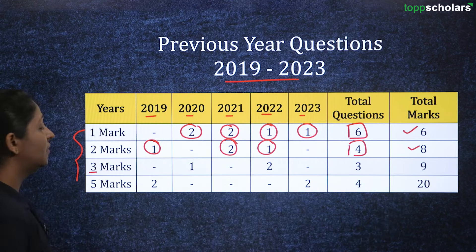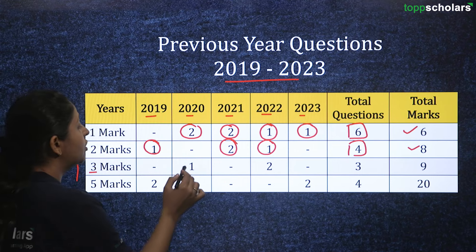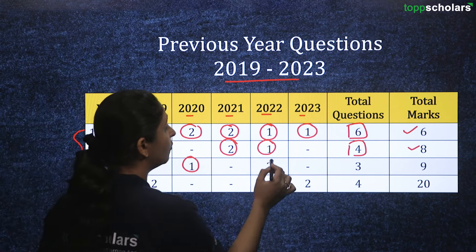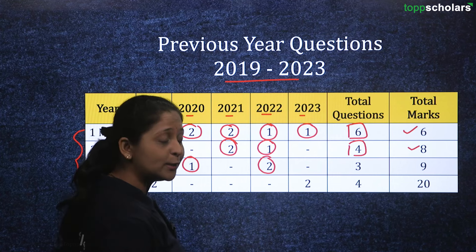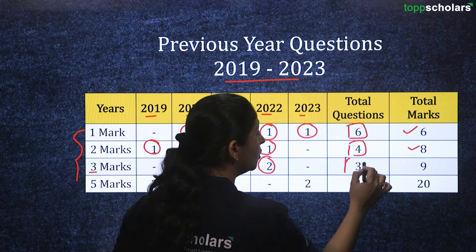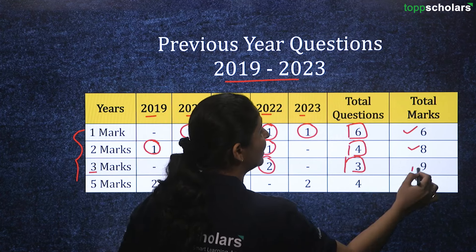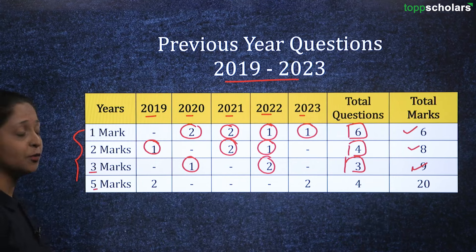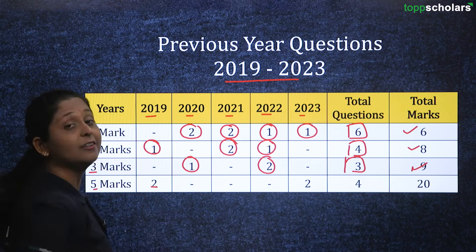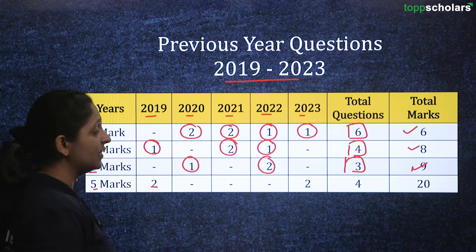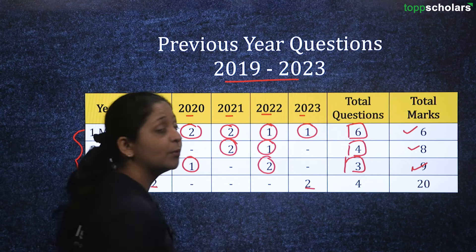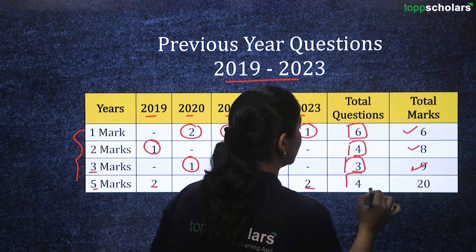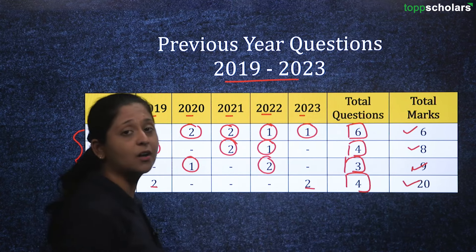For three mark questions, you have one in 2020 and two more in 2022, totalling three questions and nine marks. Finally for five mark questions, you have two questions in 2019 and two in 2023, giving four questions worth twenty marks in all.